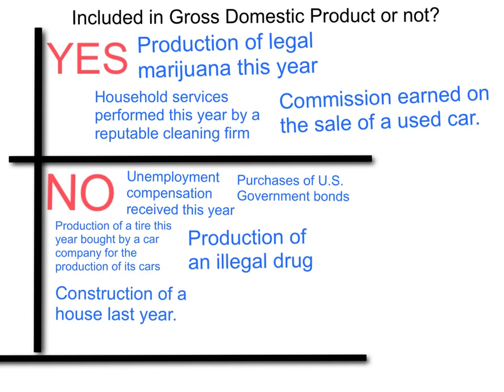So here you have it: three of the eight economic activities are included in GDP, and five of them are not included.